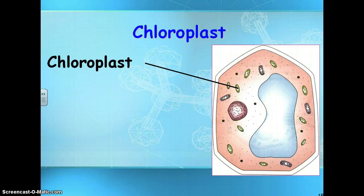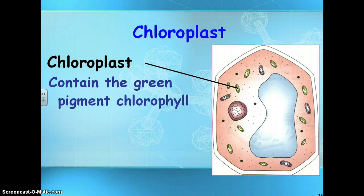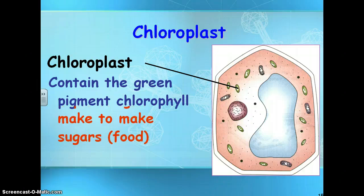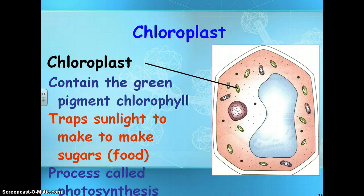Your chloroplast is only found in plant cells. Remember, it contains the green pigment, which is chlorophyll. The chlorophyll captures energy from sunlight, and then it makes food through the process of photosynthesis.